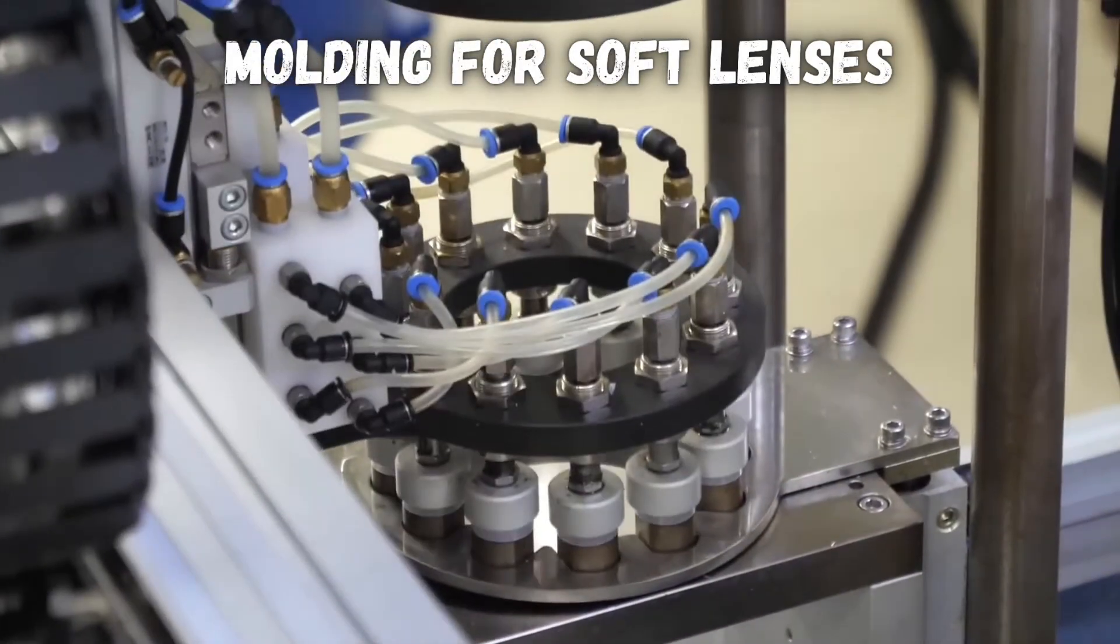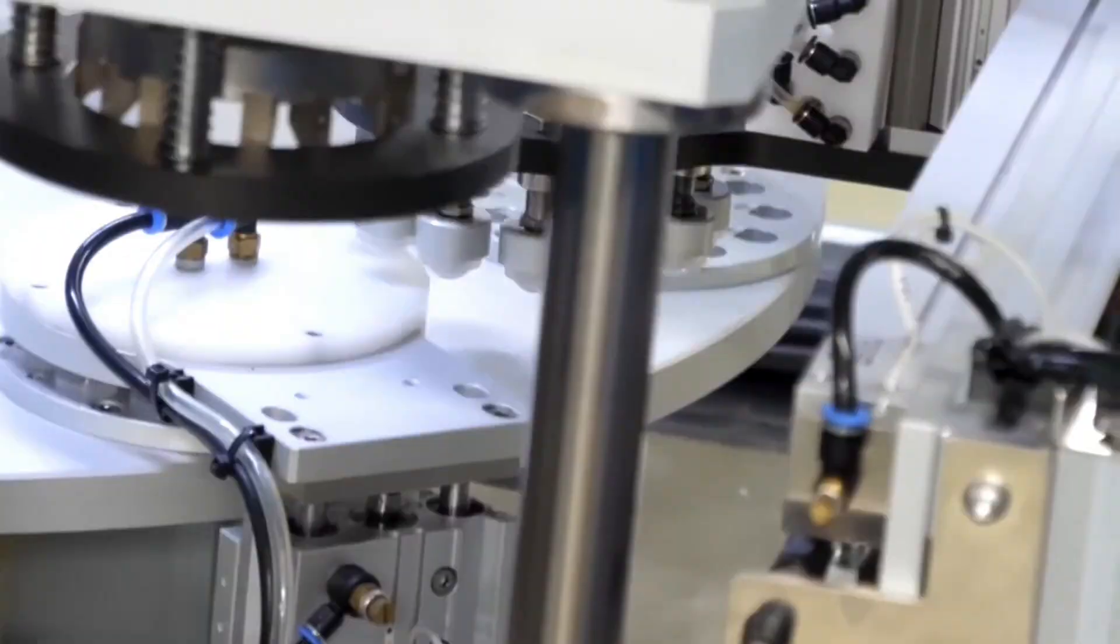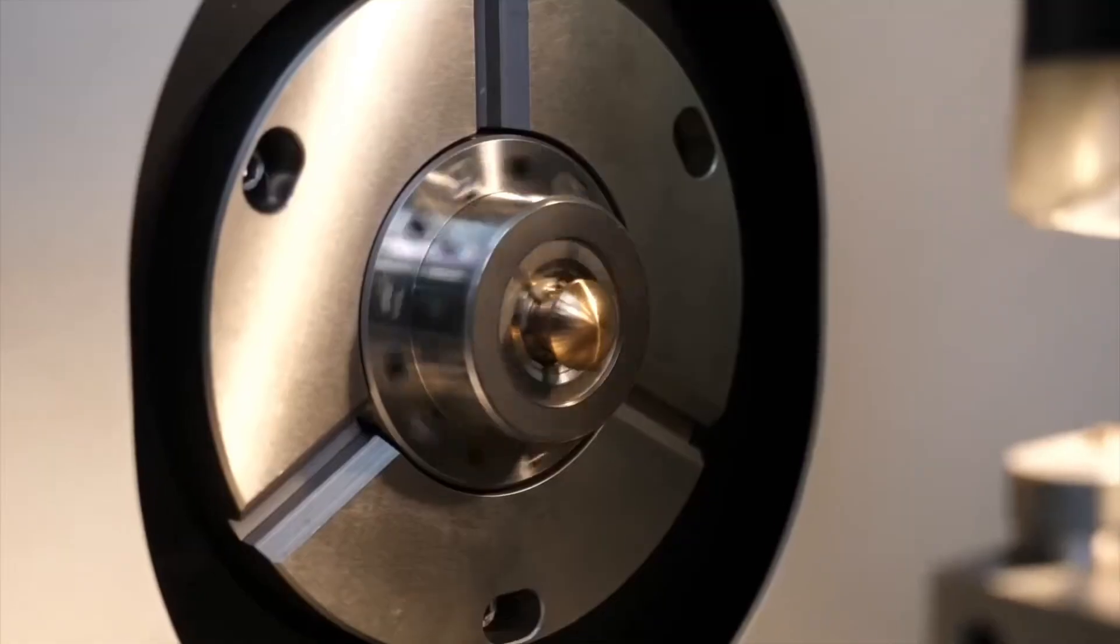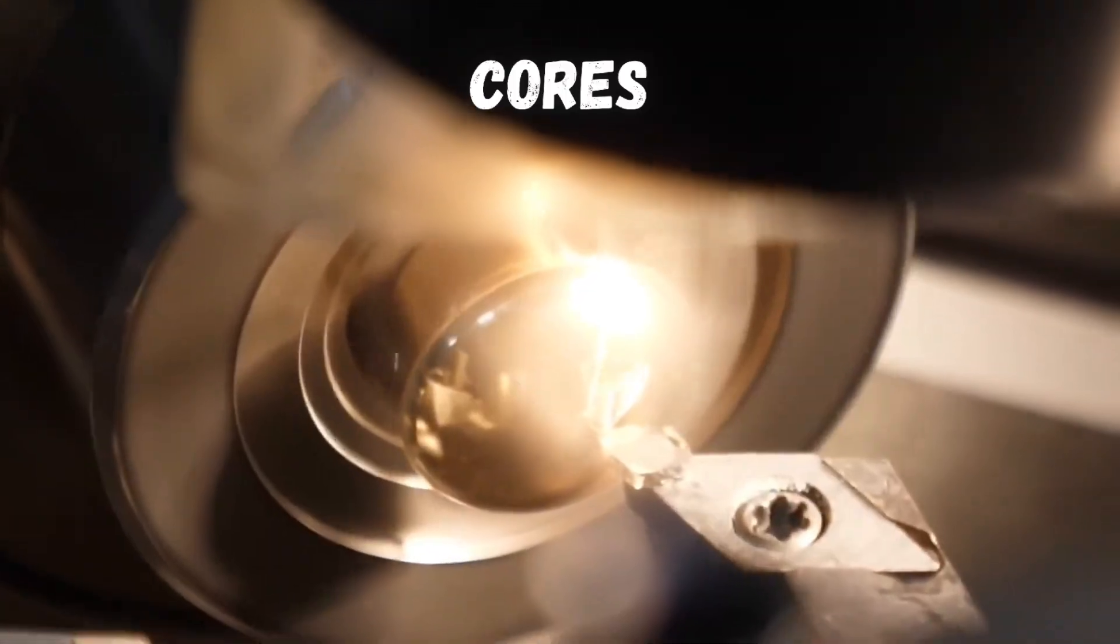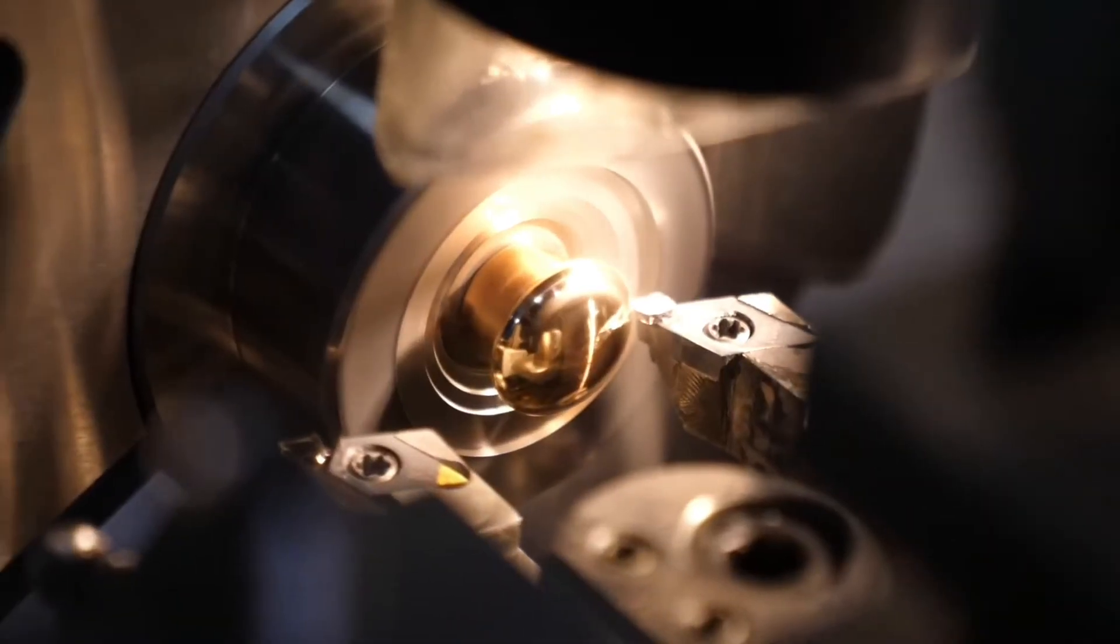Soft contacts are molded into the shape needed to correct for a certain eye prescription. High precision machining creates metal pieces called cores with the specific curvature needed for the contacts.